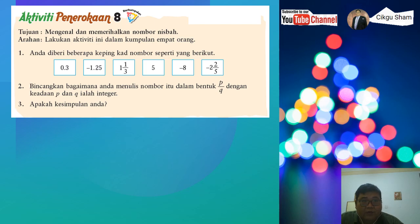Okay, so kamu diberikan beberapa copy card, kamu boleh buat card ni sendiri yang ada 0.3, negatif 1.25, 1 1/3, 5, negatif 8, negatif 2/5. Okay, bincangkan bagaimana anda menulis nombor itu dalam bentuk P per Q dengan keadaan P dan Q ialah integer. Apakah kesimpulan anda?